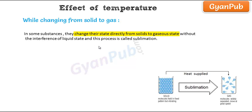Sublimation is the process where any substance changes its state from solid to gaseous state or gaseous to solid state without the interference of liquid state.